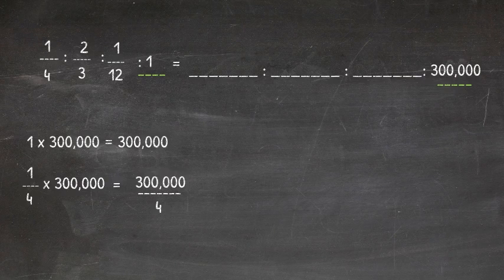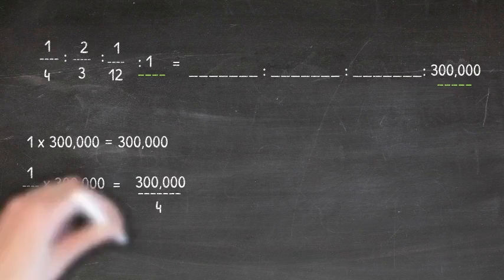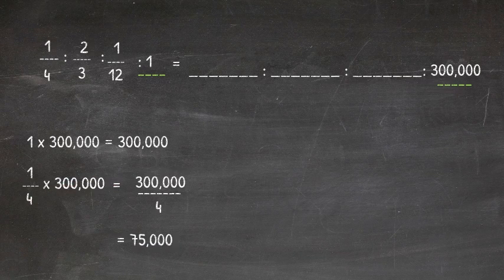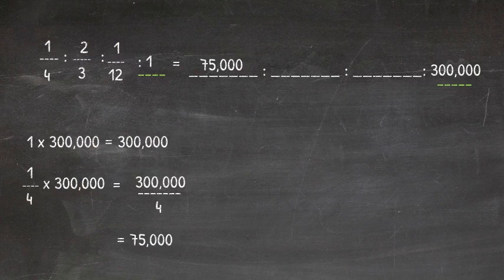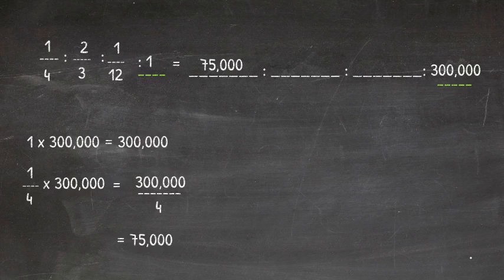This gives us 300,000 over four. We, of course, remember that fractions are also representations of divisions. So 300,000 divided by four is $75,000. We can add that to our ratio.